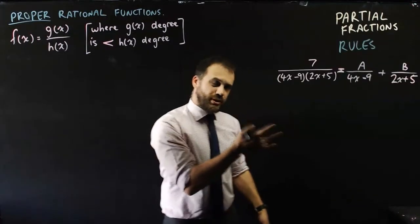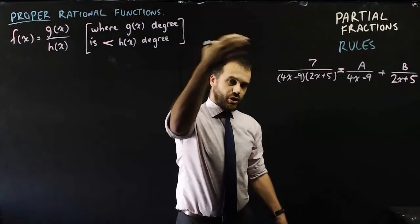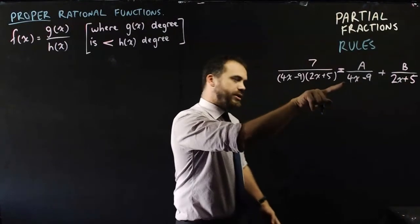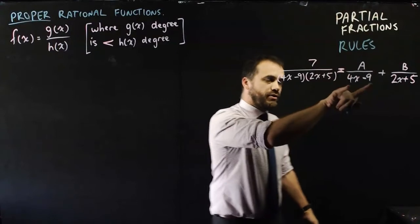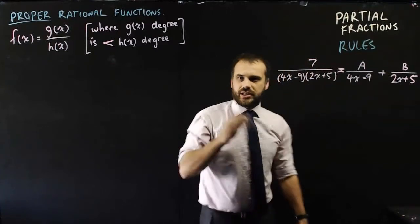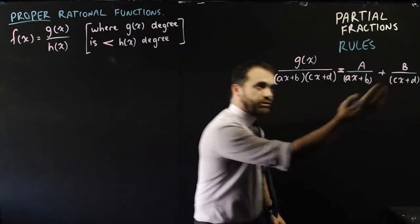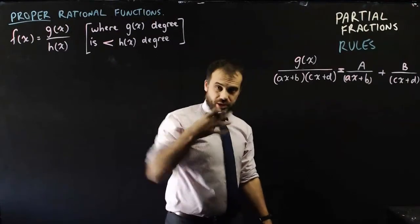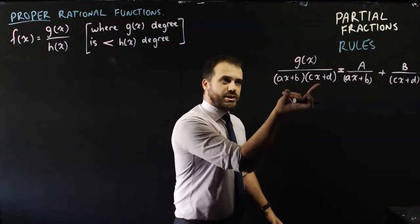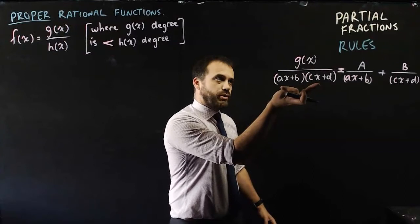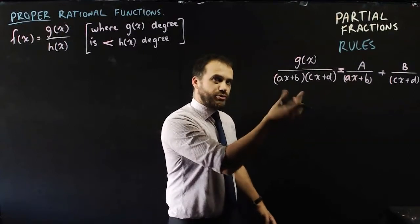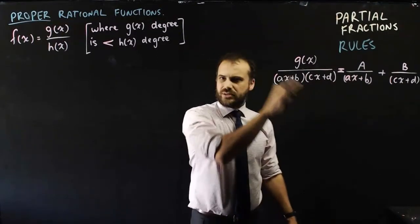Some rules to follow: if we have a number or a linear function on top and a quadratic in factorized form on the bottom, we can write it as a over the first linear factor plus b over the second linear factor. The numerator g(x) needs to be either a constant or a linear function ax + b — it needs to be smaller than the quadratic on the bottom. Then we can break it up into those factors. Let's try a worked example that uses that rule.